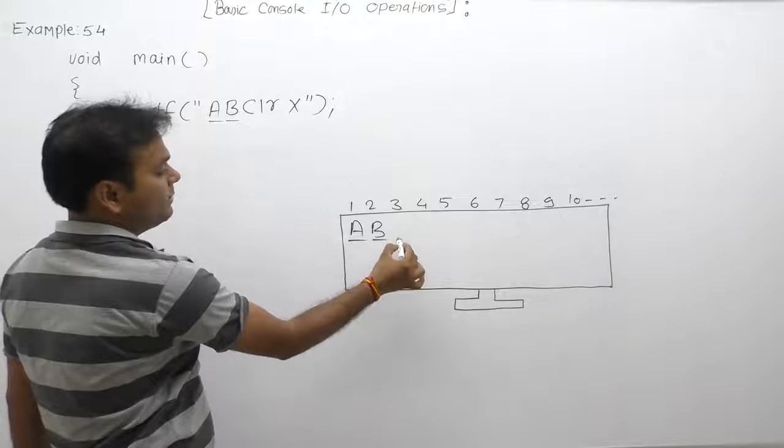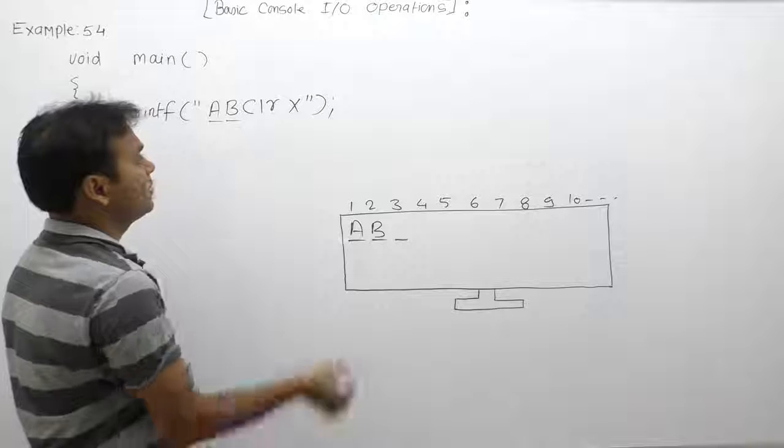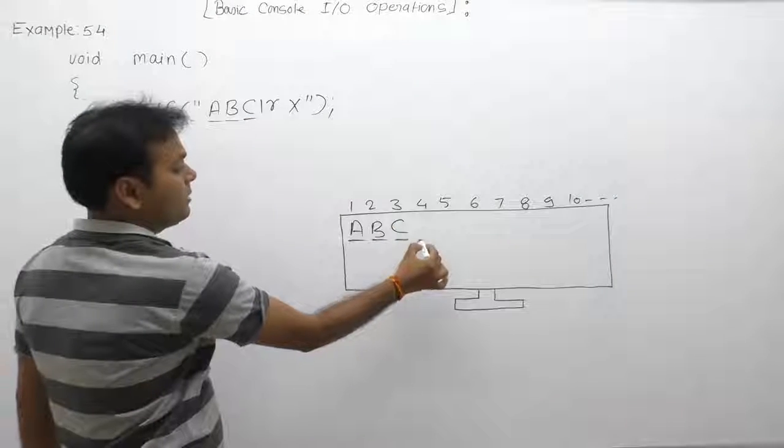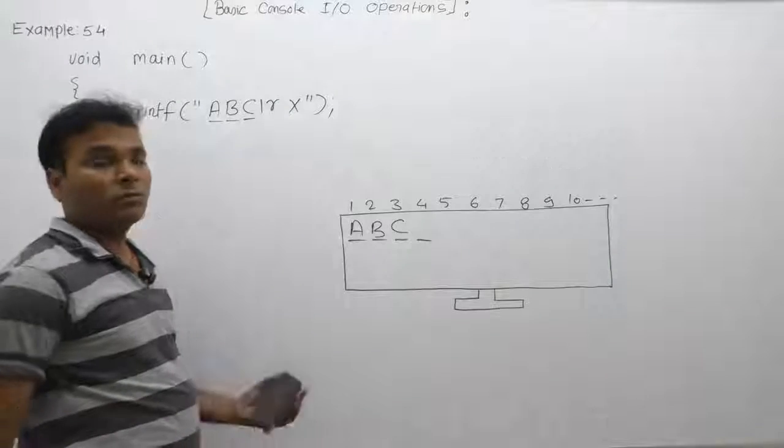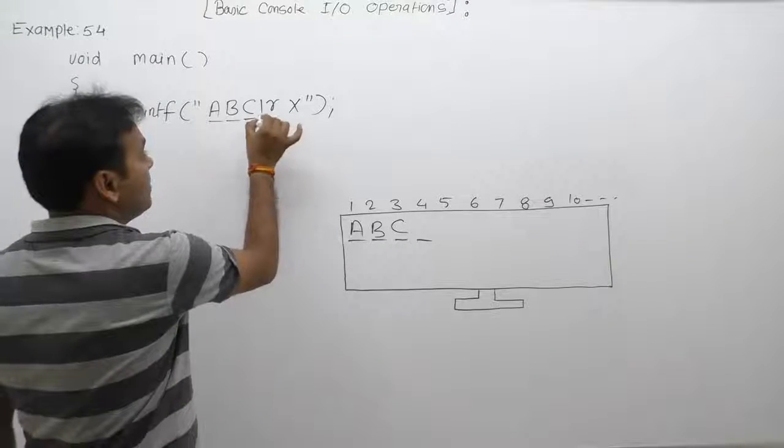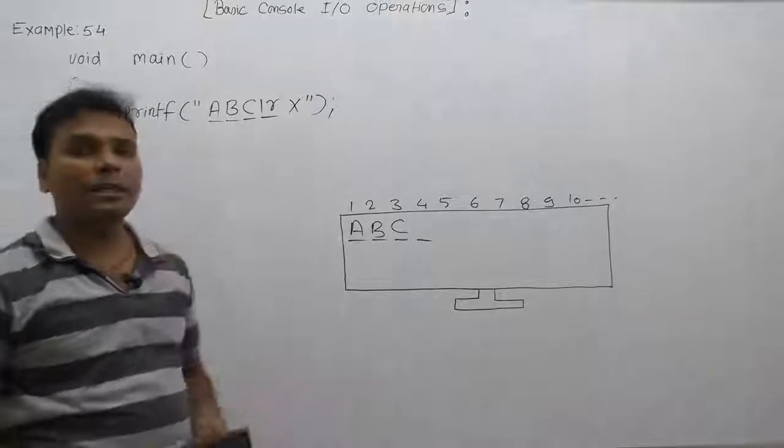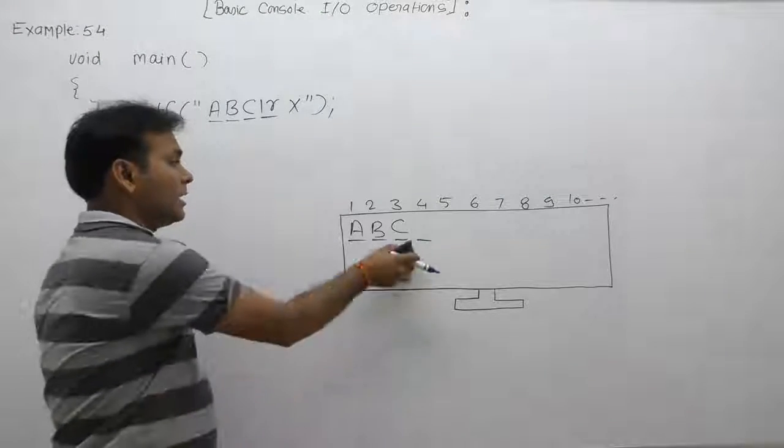After printing B, cursor will be available on the third position. Then it will print character as C and cursor will be available on the fourth position. Then it will print \r. As you know, \r is not a printable character. Just because of \r...